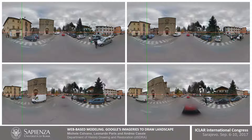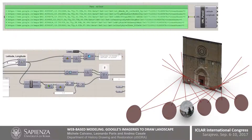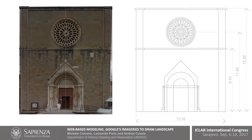Here, you can see some views near the church taken by the Google Car. We position and orient the chosen views and build the vertical surface on which to project the image. The obtained image has the real shape and from it we can get measures.